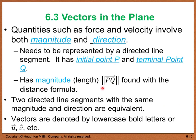You can find magnitude using the distance formula. Two directed line segments that have the same magnitude and same direction are what we call equivalent. When we look at vectors, they are going to be shown in your textbook with either a bold lowercase letter or a letter with a little arrow above it. Both of these mean vector notation.